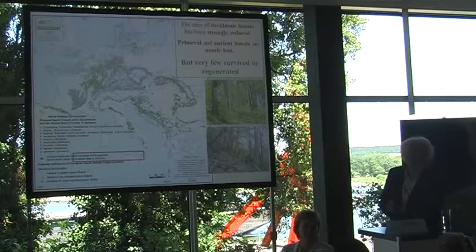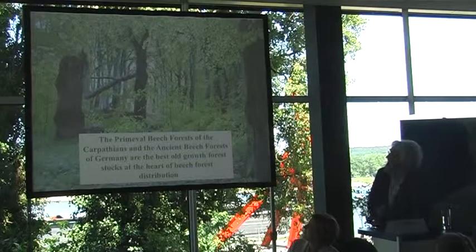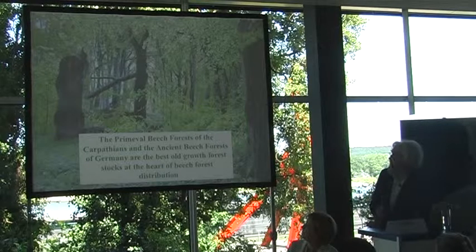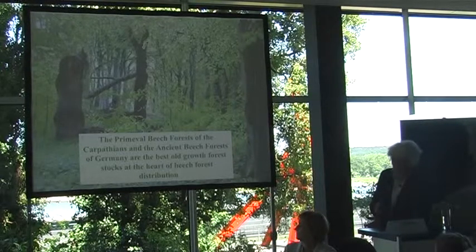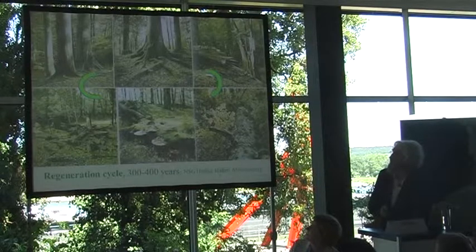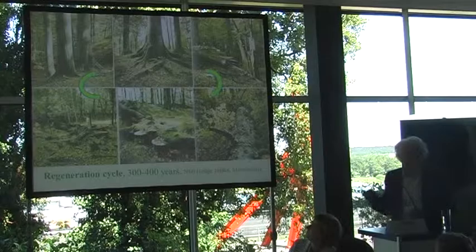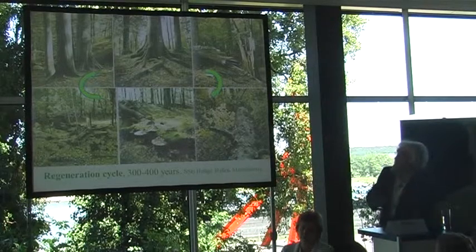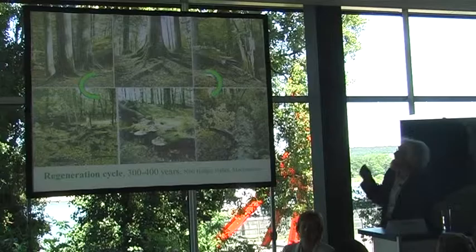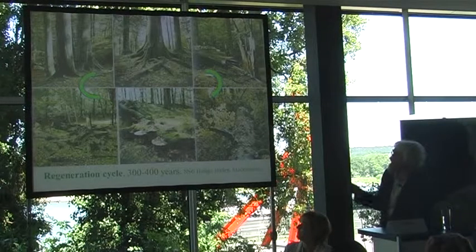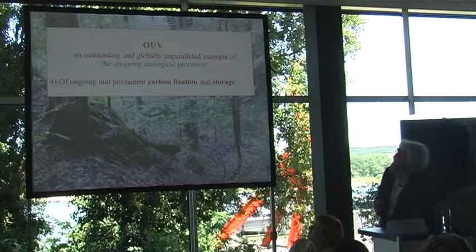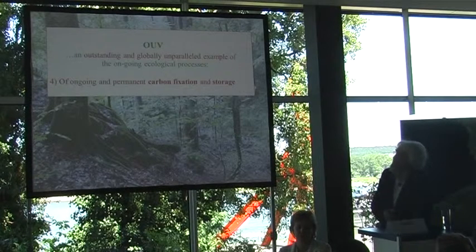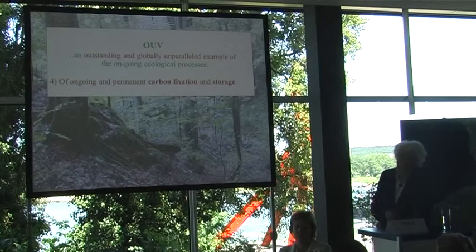That is what we mean by the survival of patches within extensive cultural landscapes. So the primeval beech forests of the Carpathians and the ancient beech forests of Germany are the best old-growth forest stocks at the core of beech forest distribution in Europe. Here, in a few pictures, the regeneration cycle — about three to four hundred years — from juvenile to old stands, through the decay phase, and the full cycle.